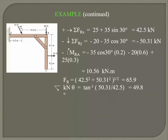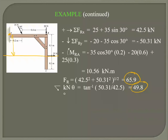We've already calculated the resultant force and the angle. Taking moment at point A: we have this force times this distance, this force times this distance, and this force line times this distance. The horizontal component acting here has no perpendicular distance from A, so it will not create any moment. The moment at point A comes out to be this value.